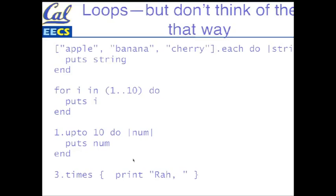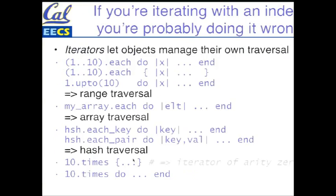So these all kind of look like loops. But in fact, they're really all manifestations of a single underlying mechanism that's considerably more general. The way I usually sum this up is: if you find yourself writing explicit iteration with an index, like a for-i loop, you're probably doing something wrong. Because the idiom in Ruby is to use iterators that allow objects to manage their own traversal. If you're coming from the Java world, this is gonna seem a little bit inside out.